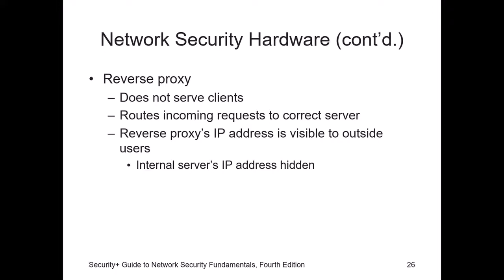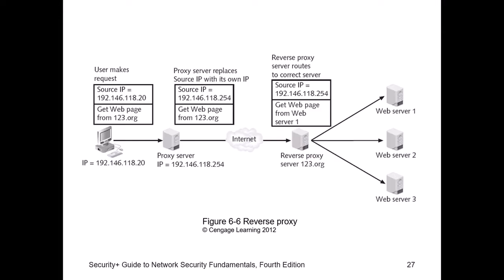A reverse proxy server works the other way — it doesn't serve clients directly. Instead, it routes incoming requests to the correct server and sends data to the appropriate internal network devices. The reverse proxy's IP address is visible to the outside world — external users always talk to the reverse proxy, and it does all the work with the outside world on your behalf. This way you're well protected.